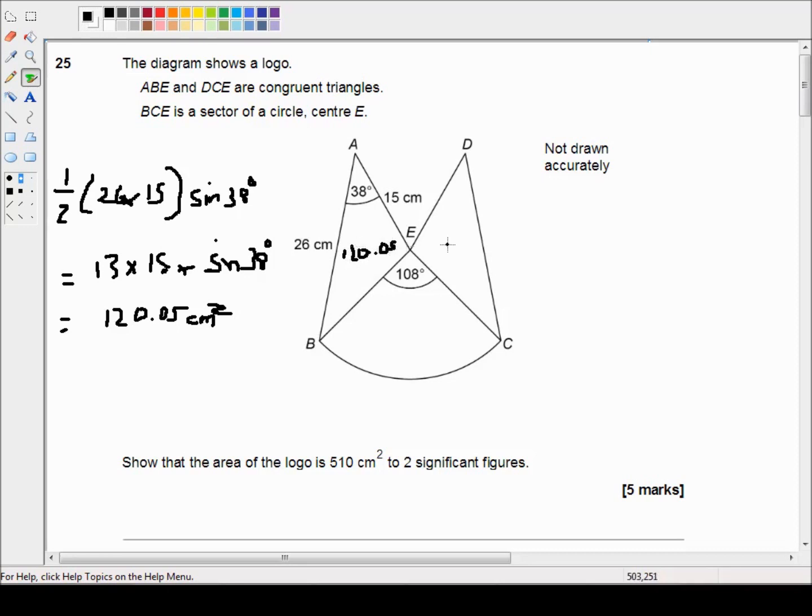Now since these two triangles are congruent as it says in the question, that means the area of this triangle is also 120.05.